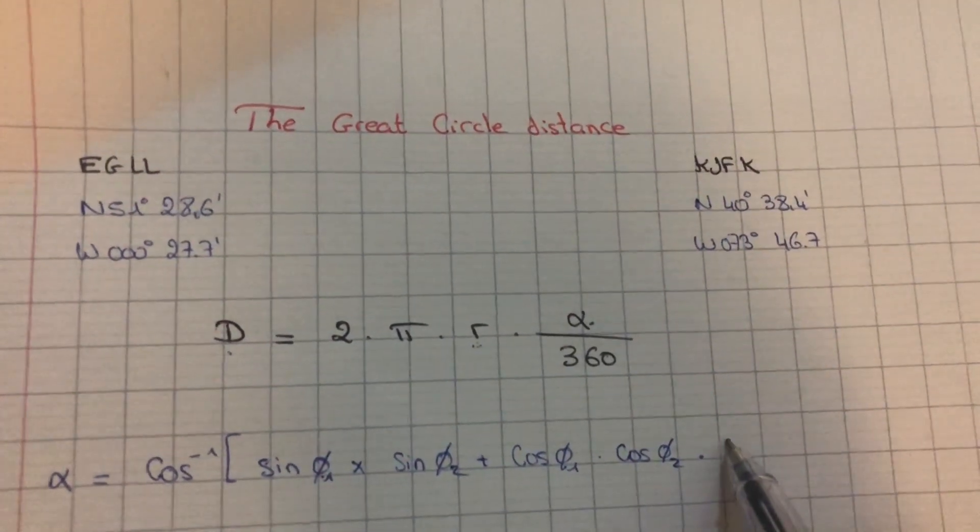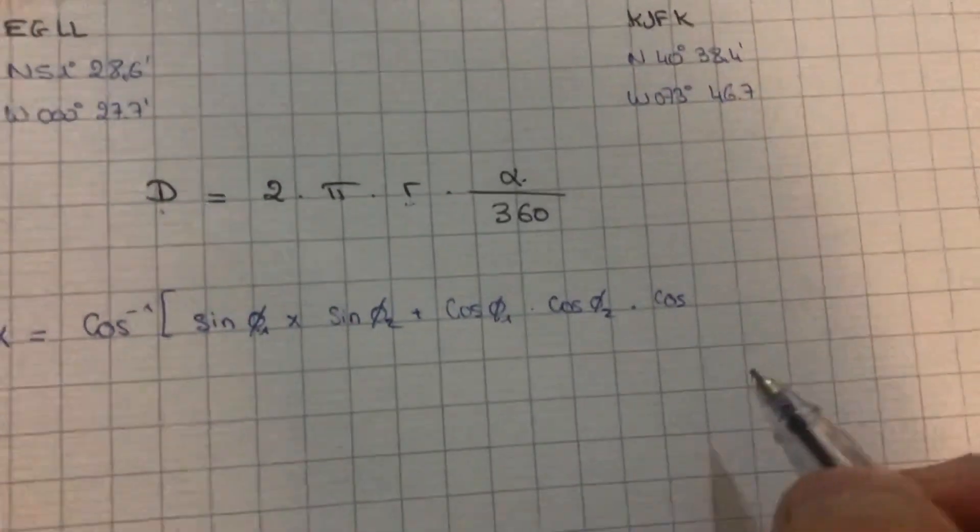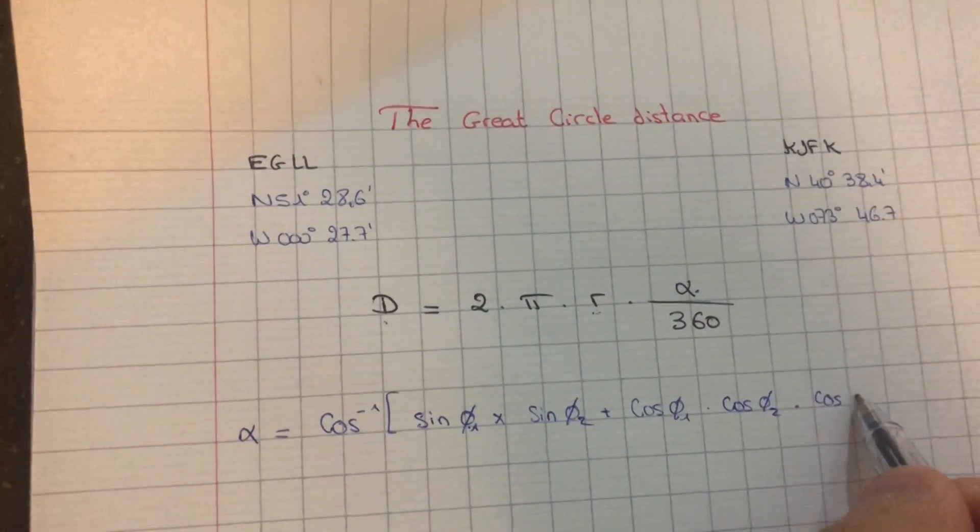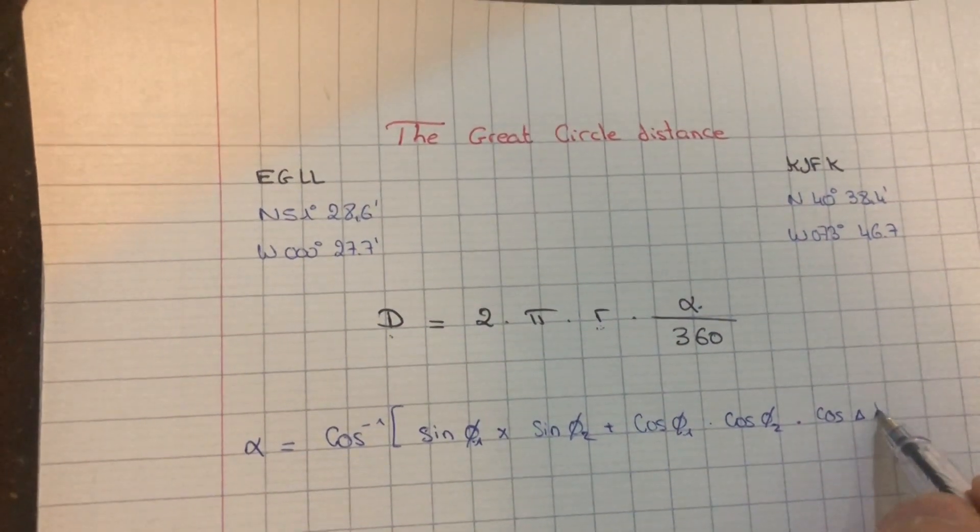multiplied, cosine, by the difference in their longitude—difference in longitude.